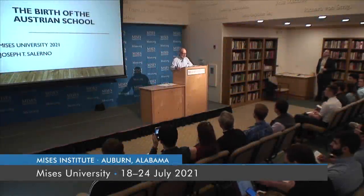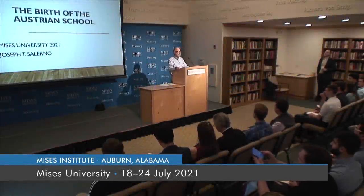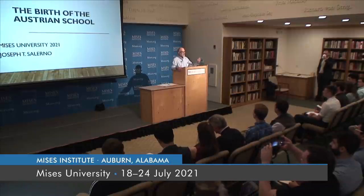Good morning everyone. My topic this morning is the birth of the Austrian School. When you talk about the Austrian School, you can't but talk about the name of Karl Menger, who is acknowledged by everyone to be the founder of the Austrian School. It's really one of the most important intellectual achievements in the history of humankind — the founding of a whole system of economics, or at least its outlines, undertaken by Menger at a fairly young age.